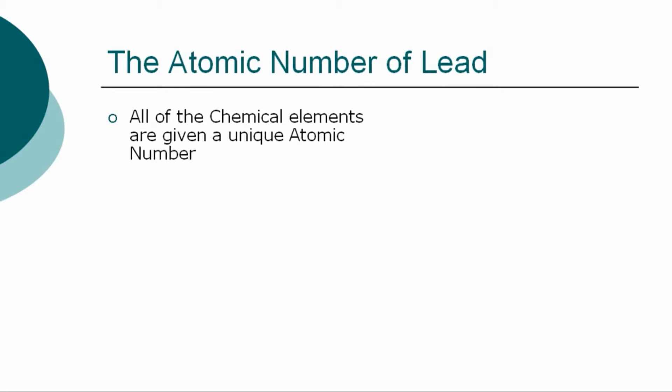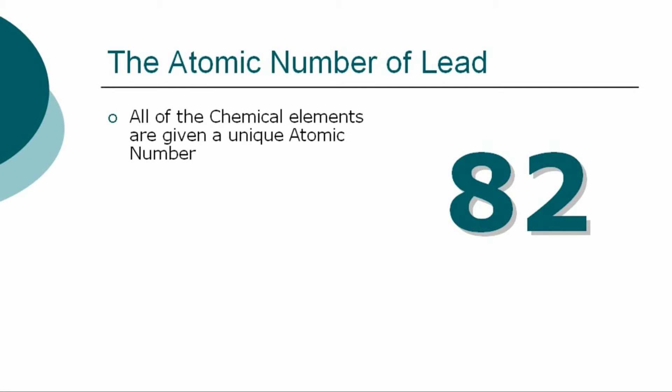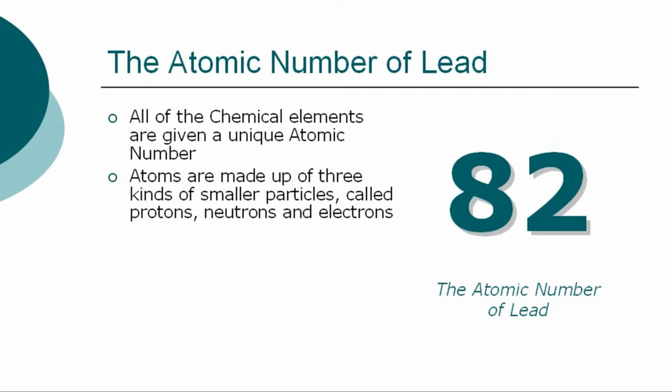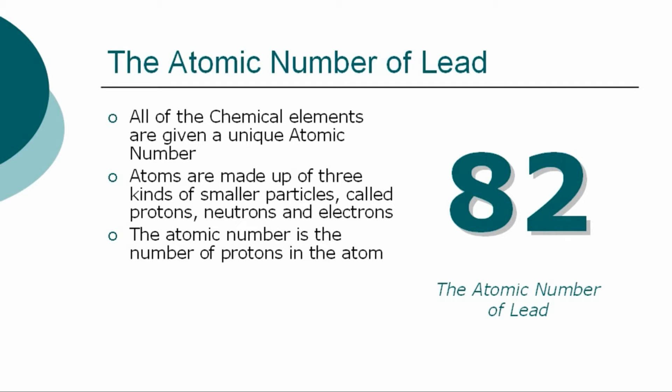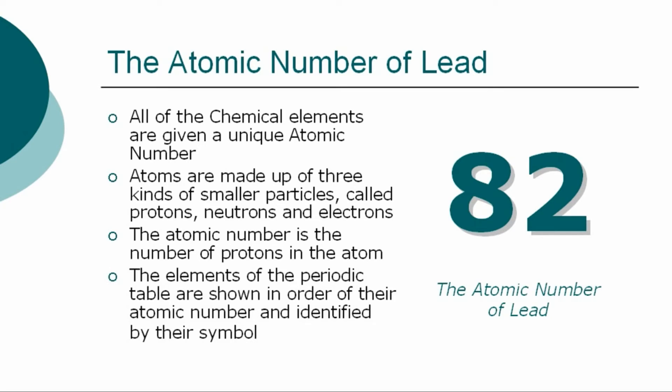All of the chemical elements are given a unique atomic number. The atomic number for lead is 82. Atoms are made up of three kinds of smaller particles called protons, neutrons, and electrons. The atomic number is the number of protons in the atom. The chemical elements of the periodic table are shown in order of atomic number and identified by their symbol.